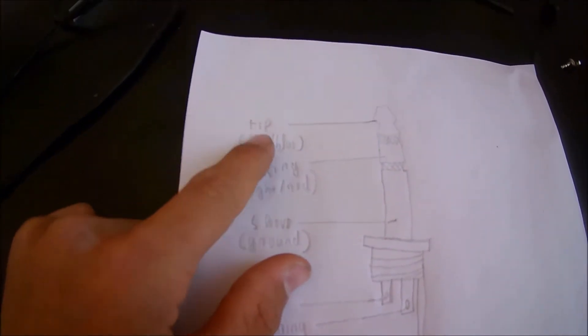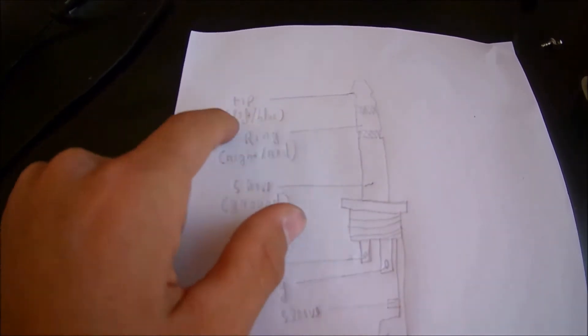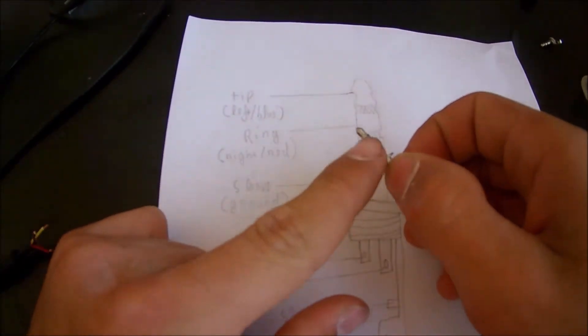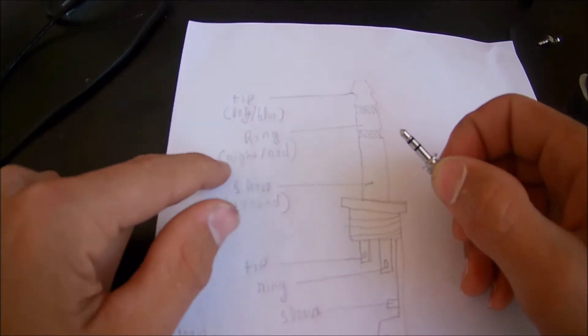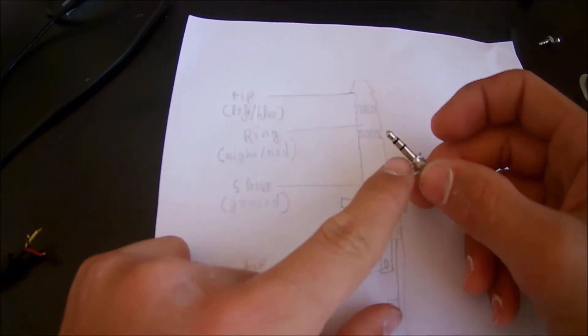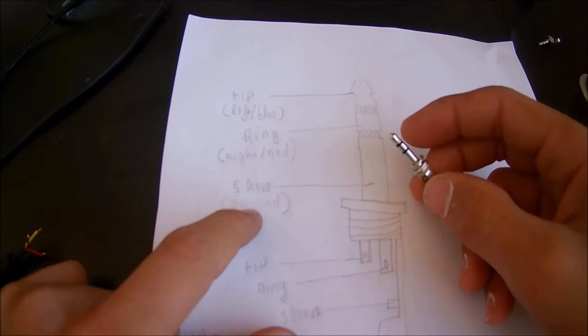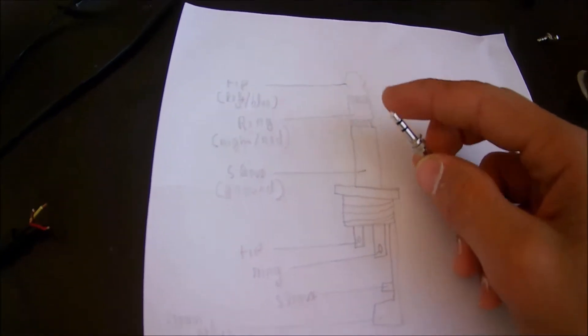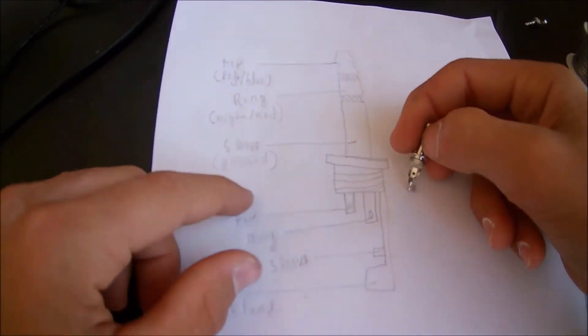The middle section or the ring is the right or red wire, which is the middle sized pin on the jack. And the sleeve is the ground wire, or the longest pin on the jack. So, now that you know the pinout of the jack, we can go ahead and solder the wire to the jack.